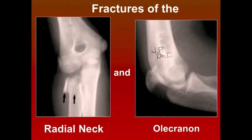Welcome again. This is another session. In this session we're going to concentrate on fractures of the radial neck and the olecranon. Now these are small fractures, but they can have big problems associated with them. There's not a lot written about these fractures in the textbooks, so I thought I'd go over my experience with these and some of the problems that we've had.